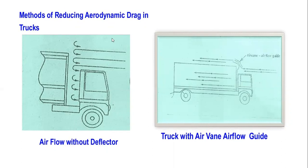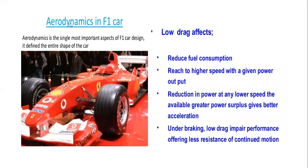These are some methods generally used for reducing aerodynamic drag. A deflector is used in trucks to control aerodynamic drag. Another method uses airflow guide vanes, used in big trucks and buses. In F1 and racing cars, vehicles are designed to lower the drag effect, reduce fuel consumption, and provide higher speed to the vehicle. These are the factors to consider in order to lower the drag effects in racing vehicles.